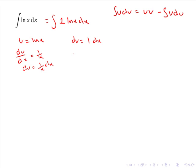While if we integrate dv we get v is equal to the integral of 1, so x. And now we can integrate 1 ln x dx to give us u times v, so ln x multiplied by x minus the integral of v, so x times du which is 1 over x dx.